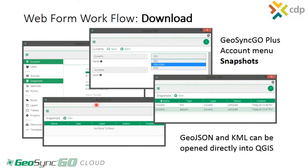Now we want to look at some of the ways that GeoSync Go Plus web form workflows can be integrated with QGIS. One way is to download the features and add them into QGIS. To do that, you have to go to your account — you have to be logged in as an administrator. You go to Account and you'll see a new option there: Snapshots. Basically, we're going to take a snapshot of the data associated with or displayed by that layer. Once you select Snapshots, it'll bring you to a new menu where you'll see a list of any existing snapshots. Select New.